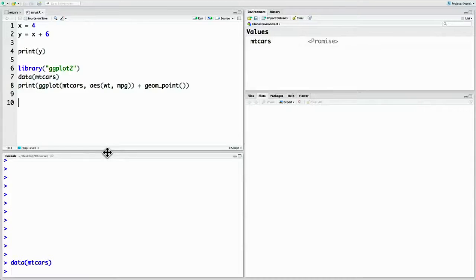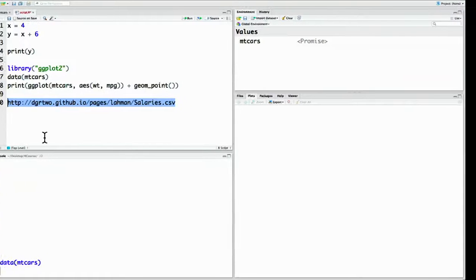So the URL for this page, which should be provided to you, can be found at http dgrtwo.github.io slash pages slash laman l-a-h-m-a-n slash salaries dot csv. So take this URL and put it into your favorite web browser.